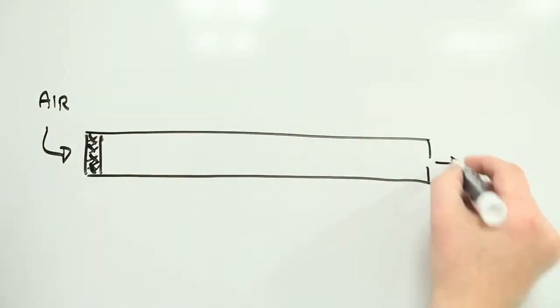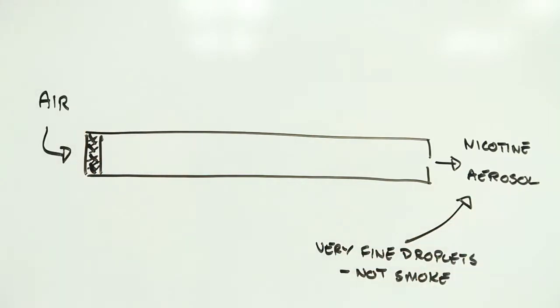Electronic cigarettes are primarily designed to get nicotine into your body via your lungs without many of the downsides of conventional cigarettes. The beauty of the system is that you retain the physical experience of smoking, or vaping as it's called in this case, but without the actual smoke.